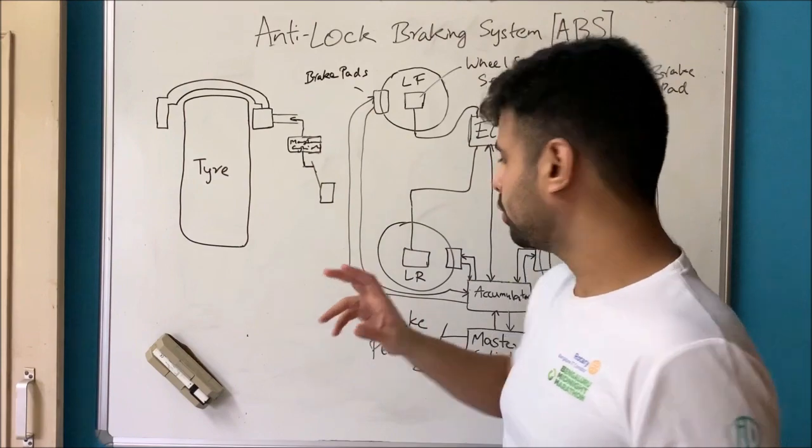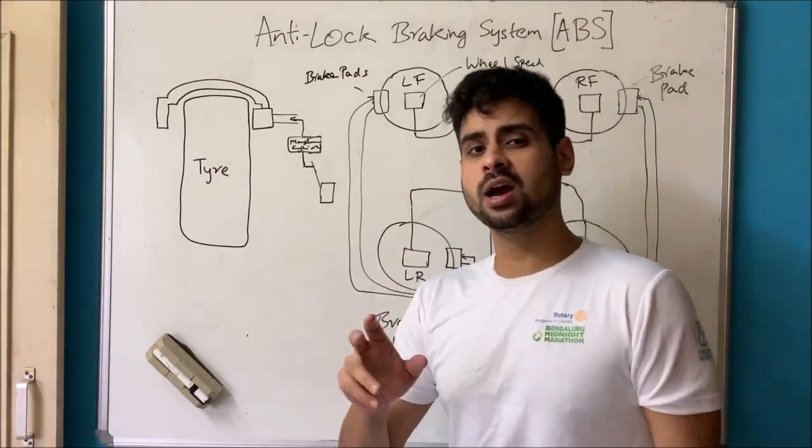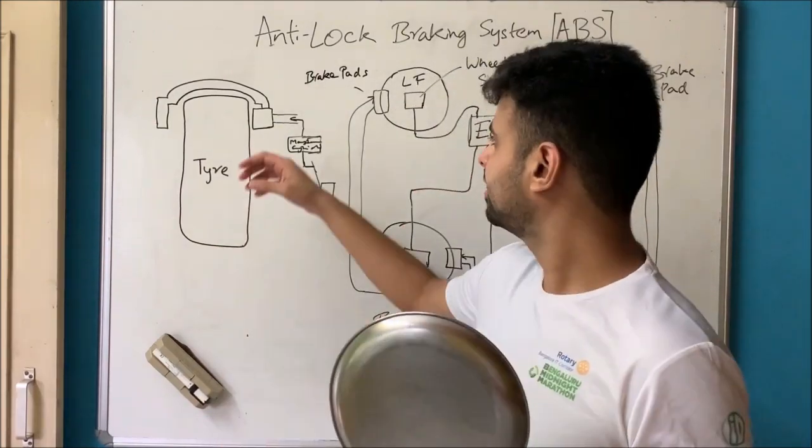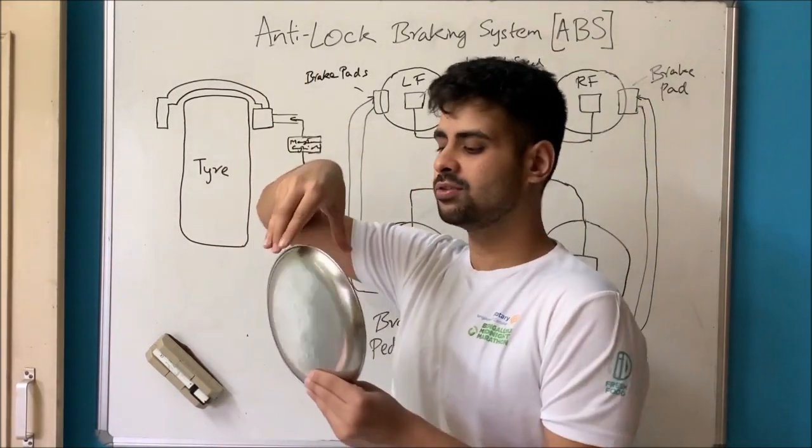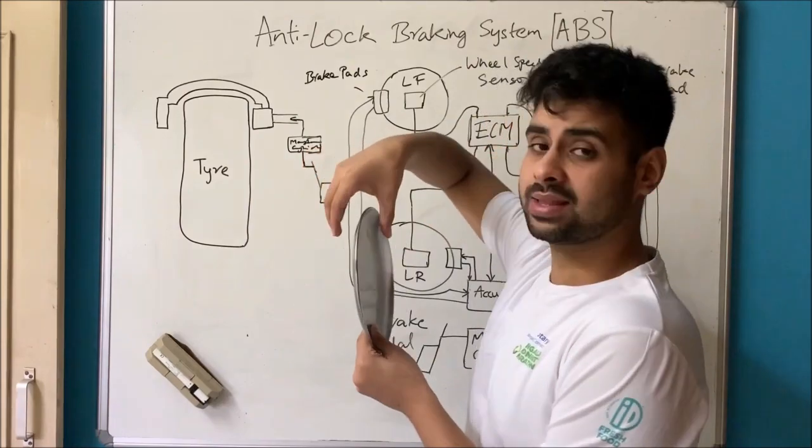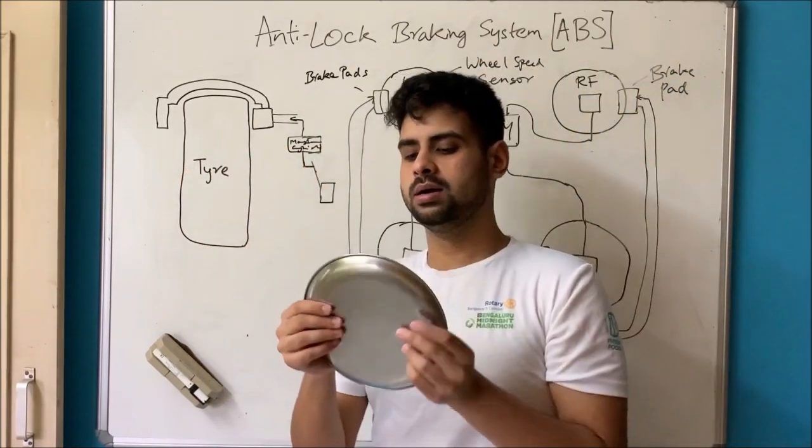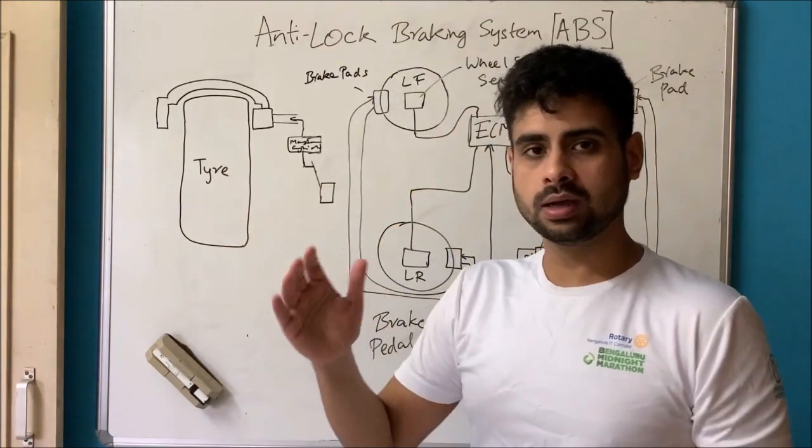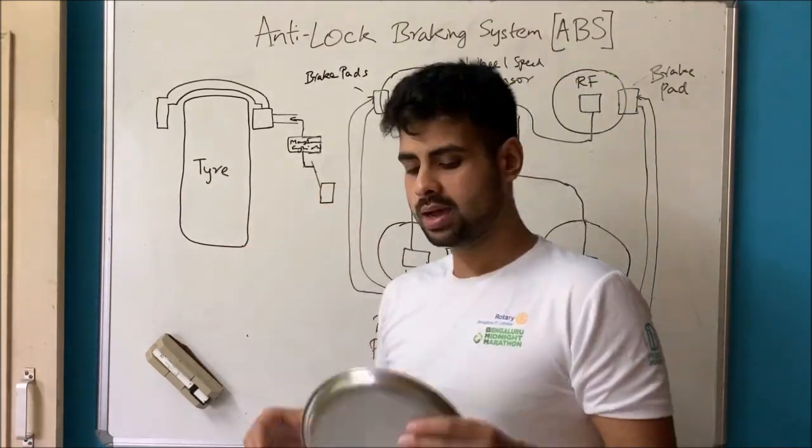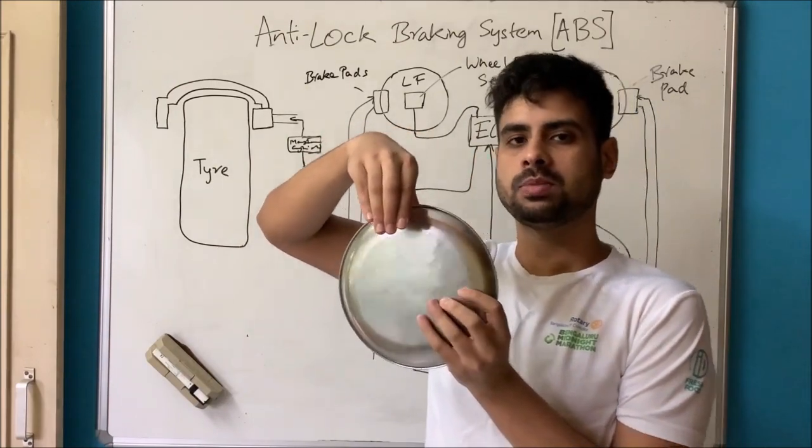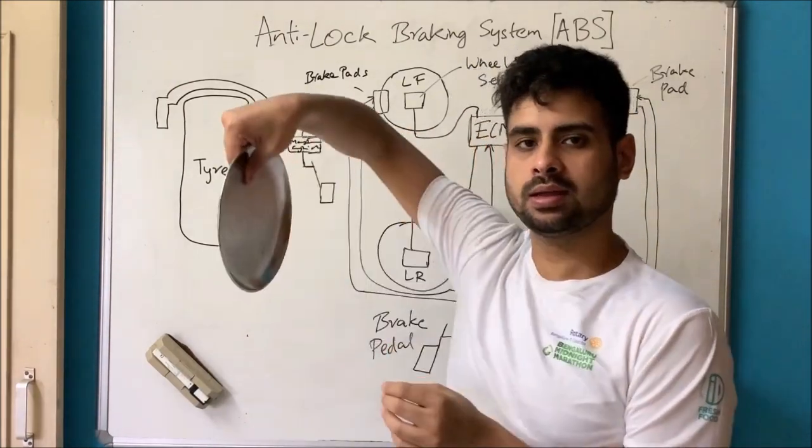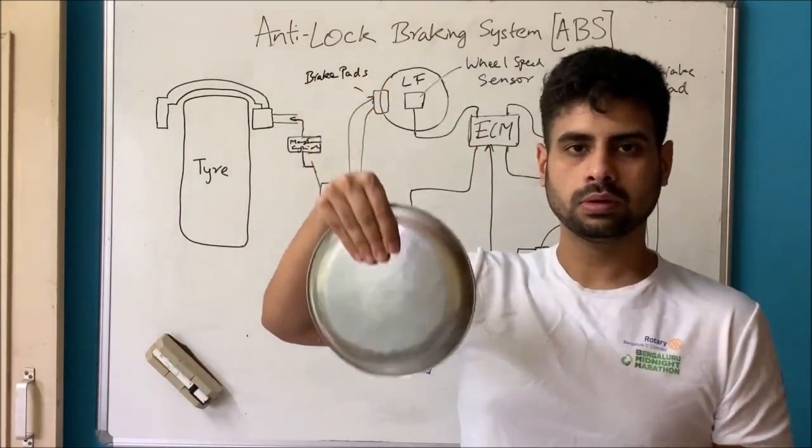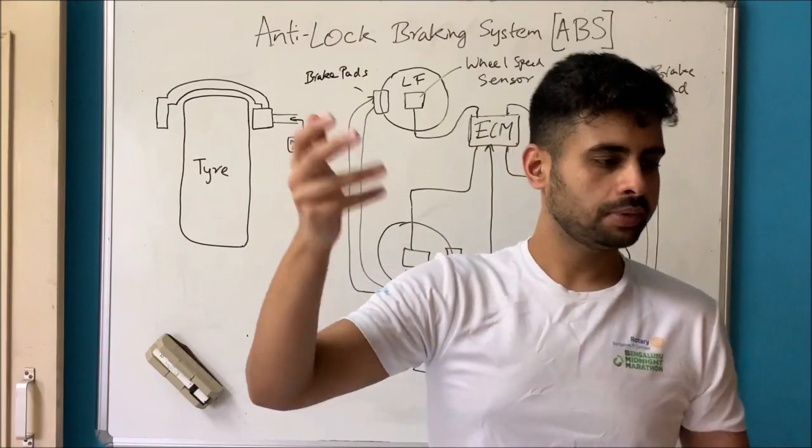Now before we get into this whole ABS concept, let's understand how a normal disc brake works. Your car's tire, I've got it here and the brake pad which I've got here just mounted on top like that. Let's say you're driving along, your wheel is spinning and you want to brake, so you press the brake pedal and the brake pad clamps on like that. It prevents your wheel from turning and you apply the brake.